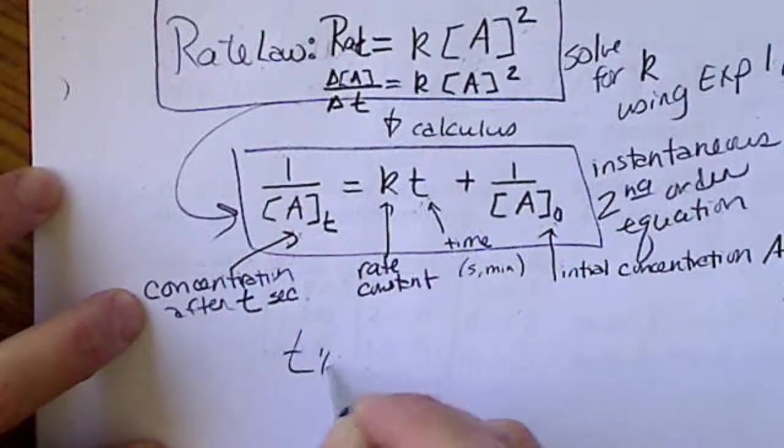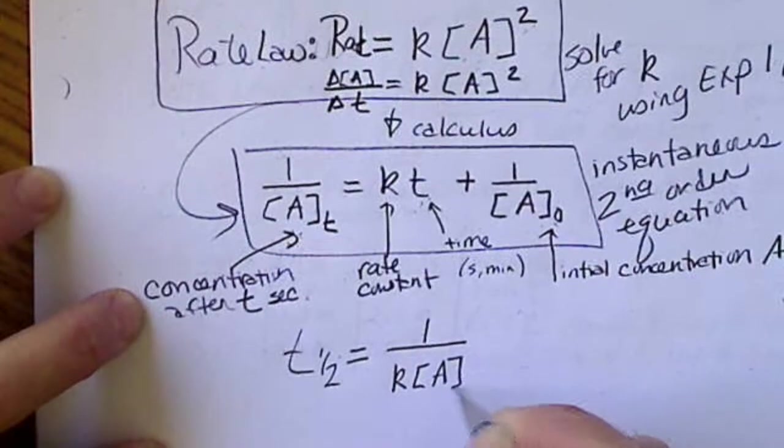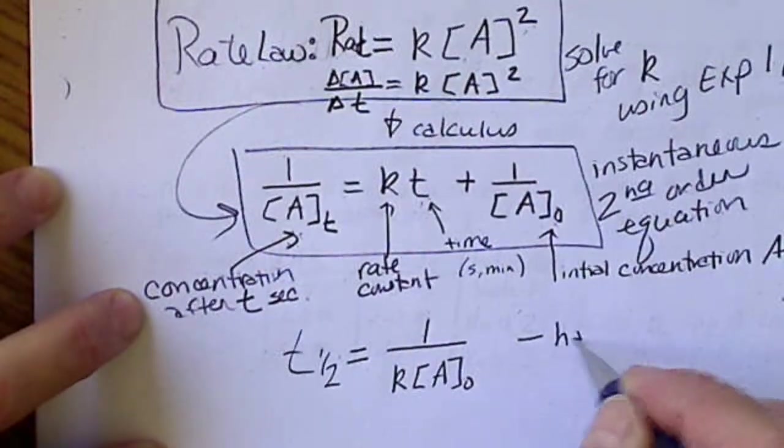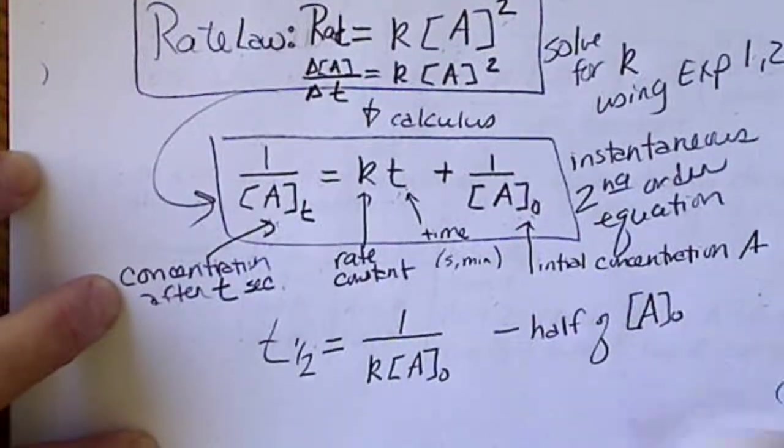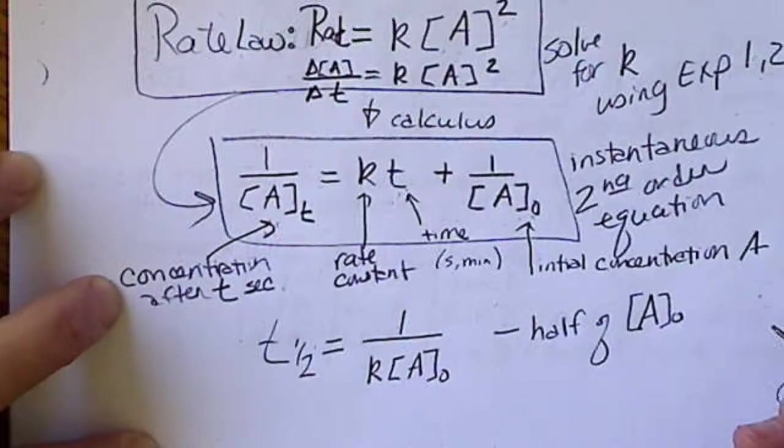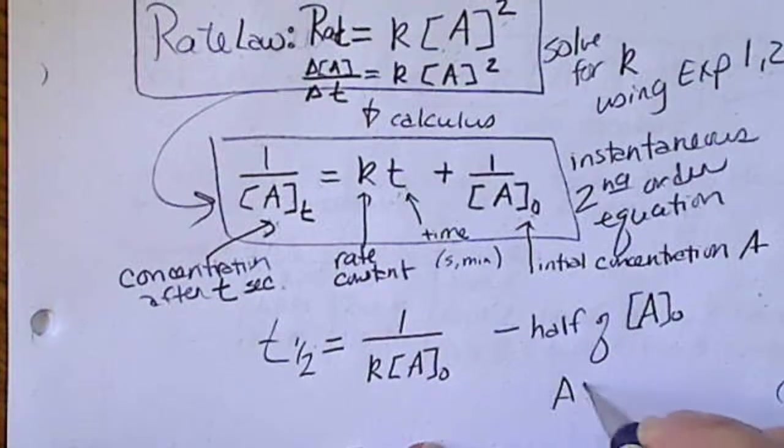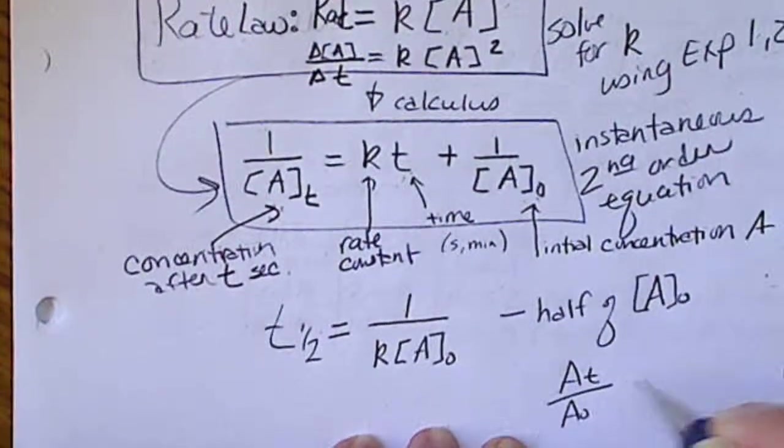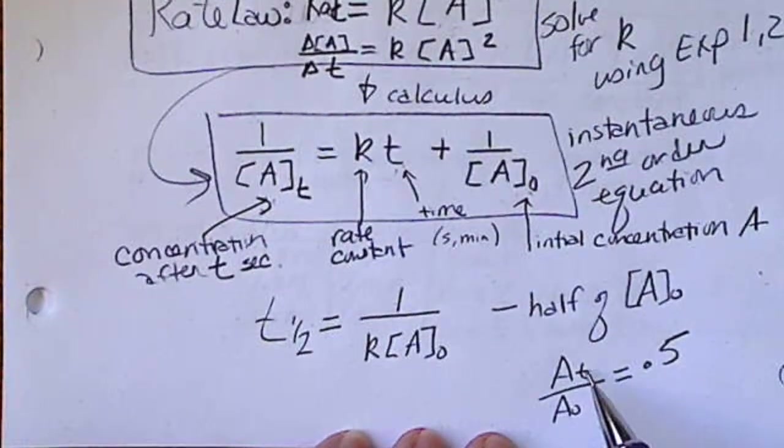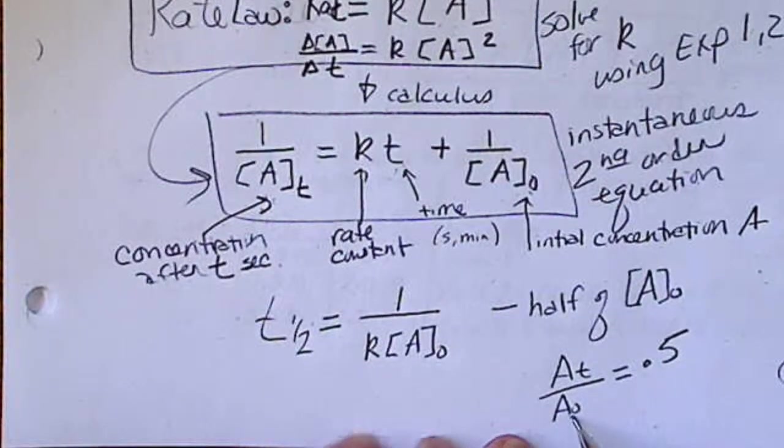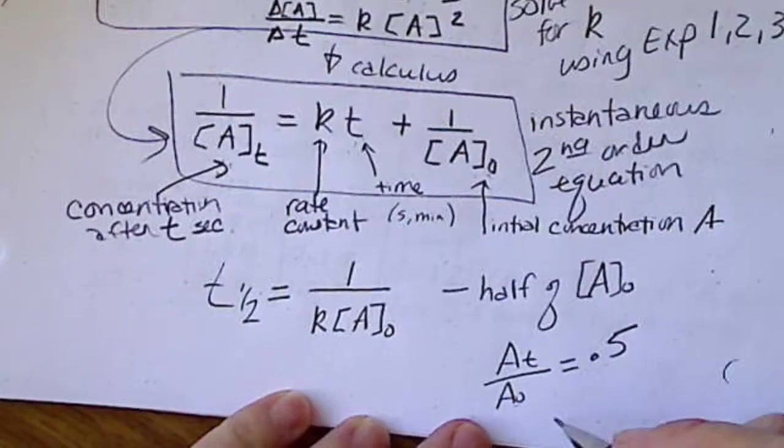So then the half-life is 1 over K times A naught to the second power. This is when half of the initial concentration is gone or left. And you probably could derive that from here. So, when A at time T divided by A naught equals 0.5, then that means your final concentration divided by your initial concentration is exactly half.